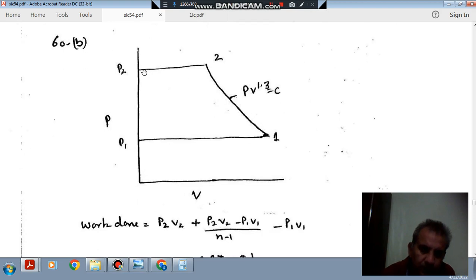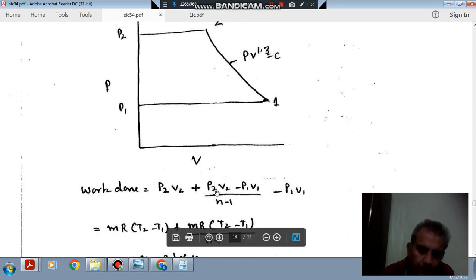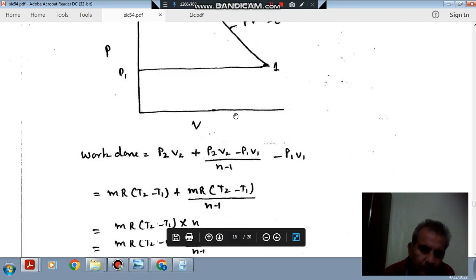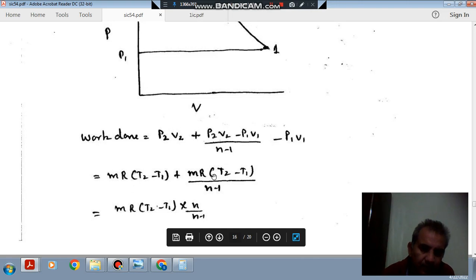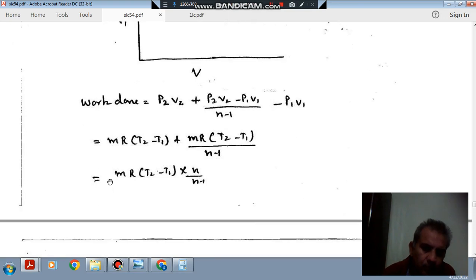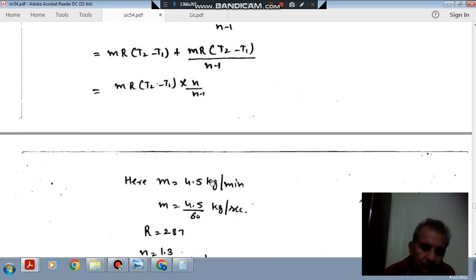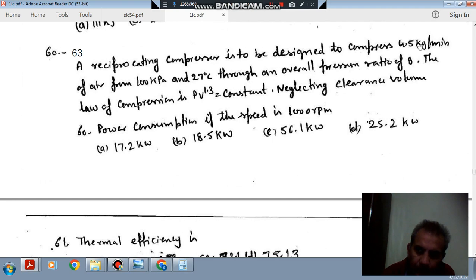The work done will be given by P2V2 minus P1V1 and area under this curve. P2V2 is MRT2 and P1V1 is MRT1, so it is MRT2 minus T1 divided by N minus 1. Putting the value of P2V2 as MRT2 and P1V1 as MRT1, it will be MR(T2 minus T1) times N divided by N minus 1.